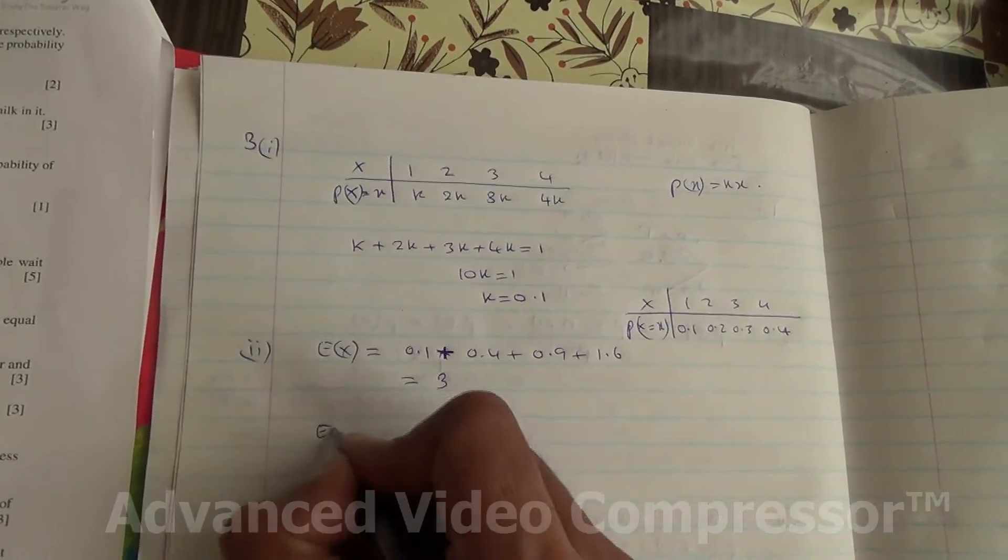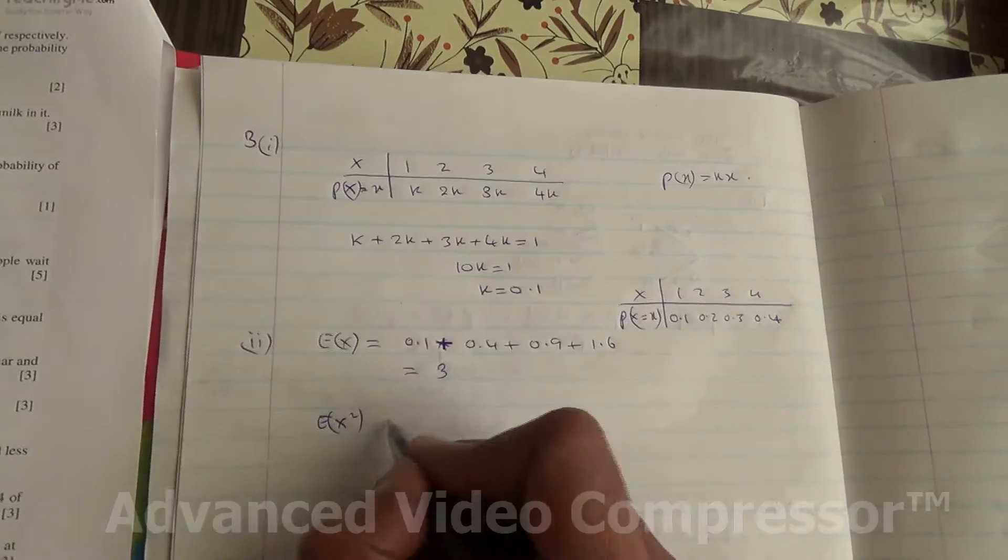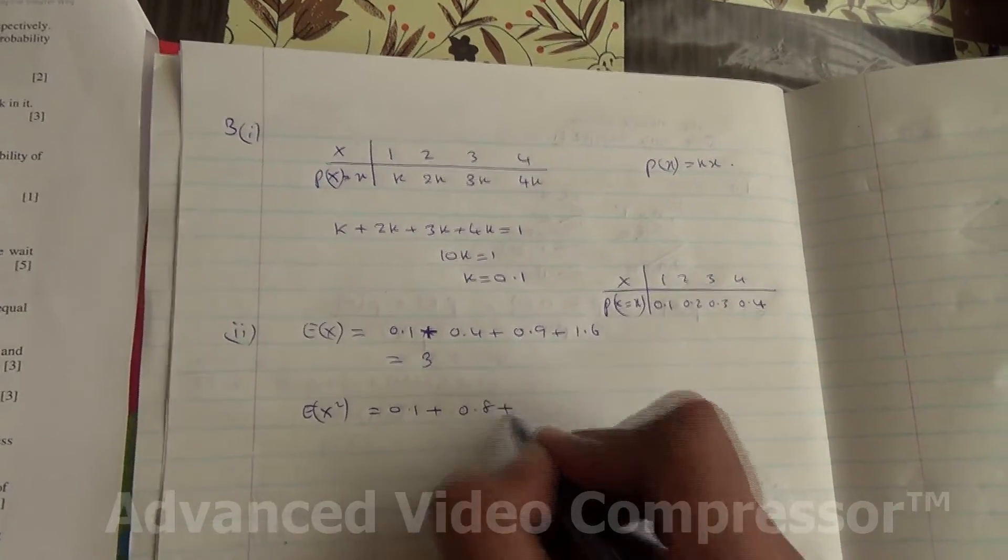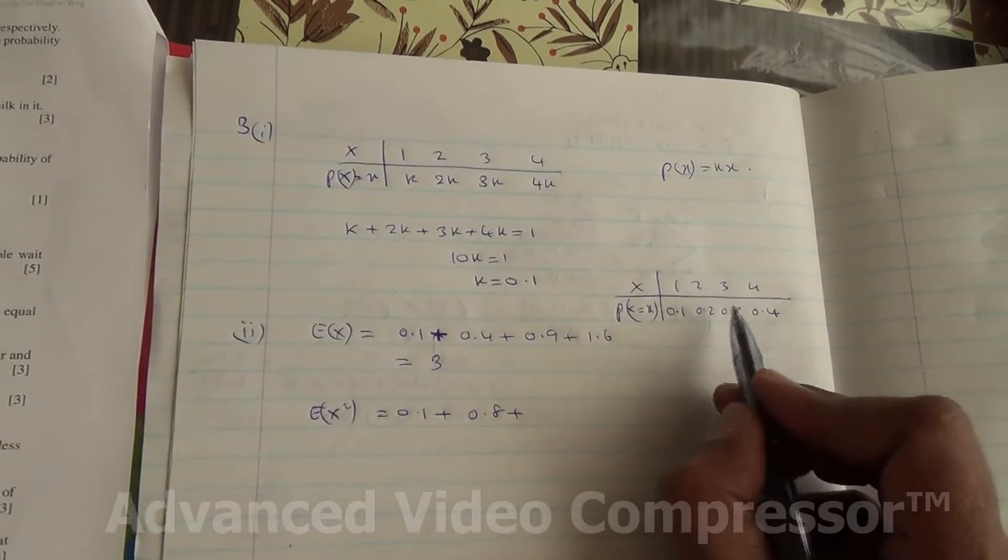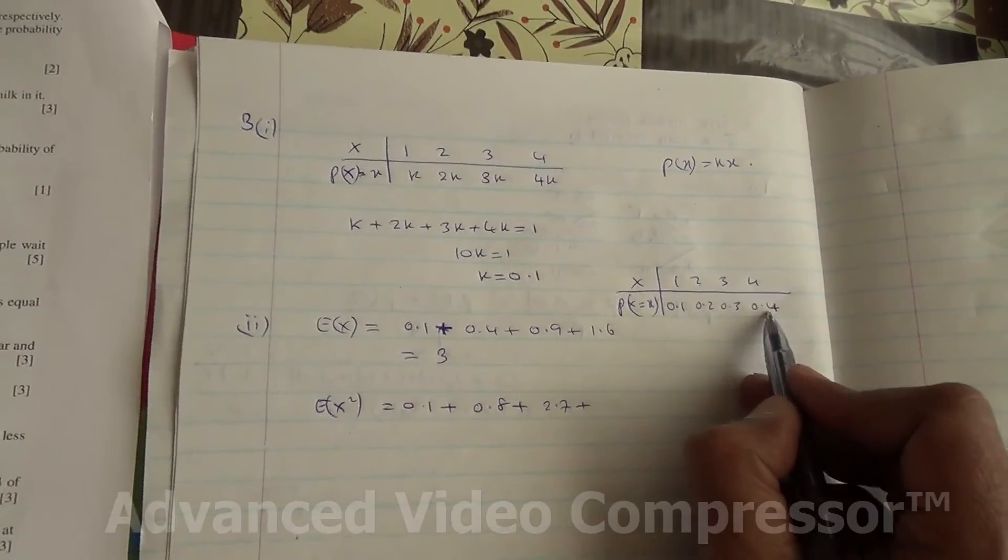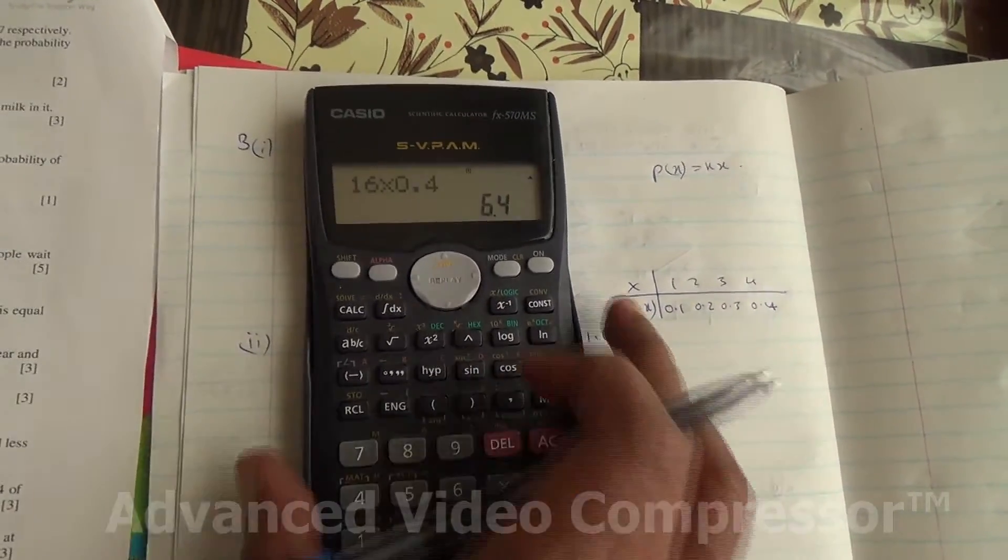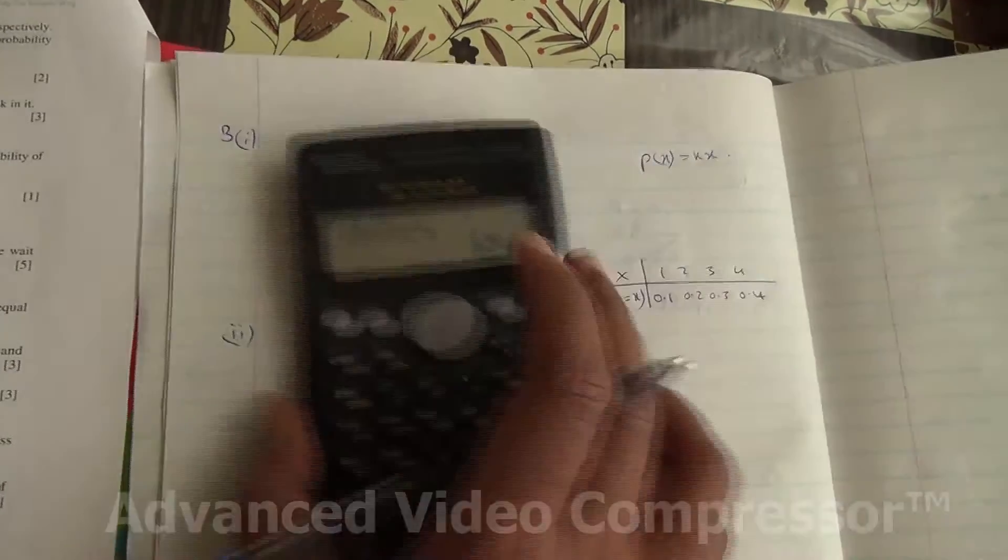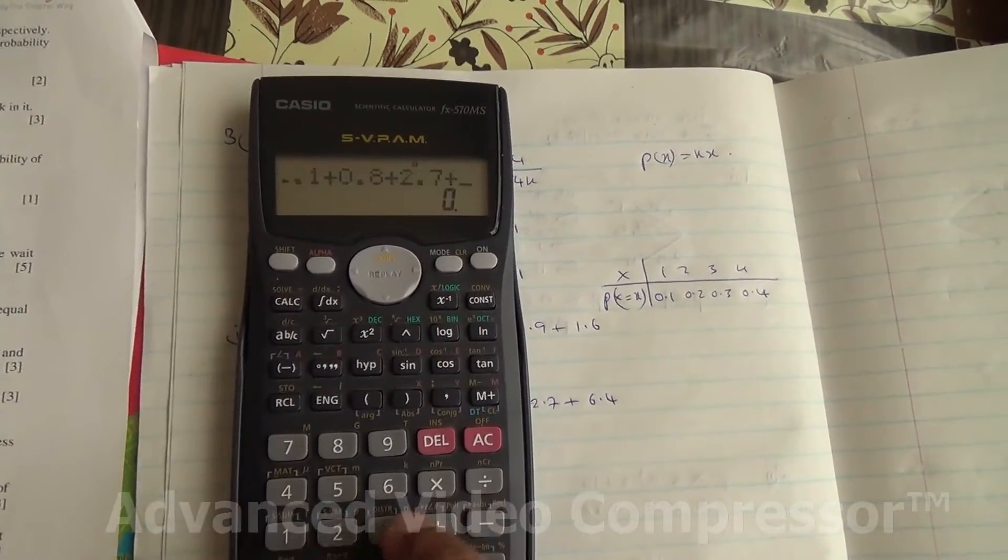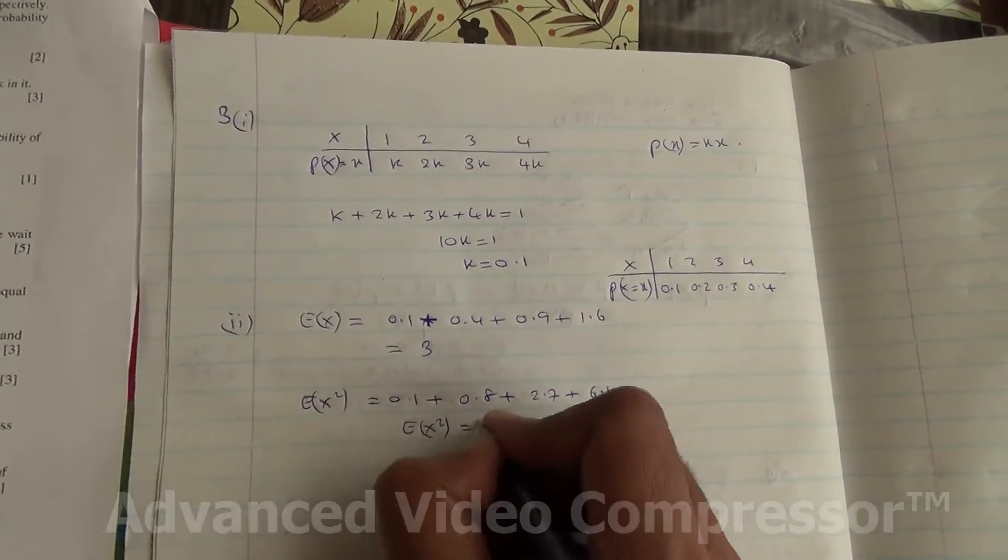So the summation of X squared. X squared is this. 1 to the square times 0.1 is 0.1 plus 2 to the square is 4. 4 times 0.2 is 0.8 plus 3, so 9 times 0.3 is 2.7 plus 16 times 0.4 is 6.4. And if you add all of them up, 0.1 plus 0.8 plus 2.7, then 6.4, equals 10. So E of X squared is equal to 10.